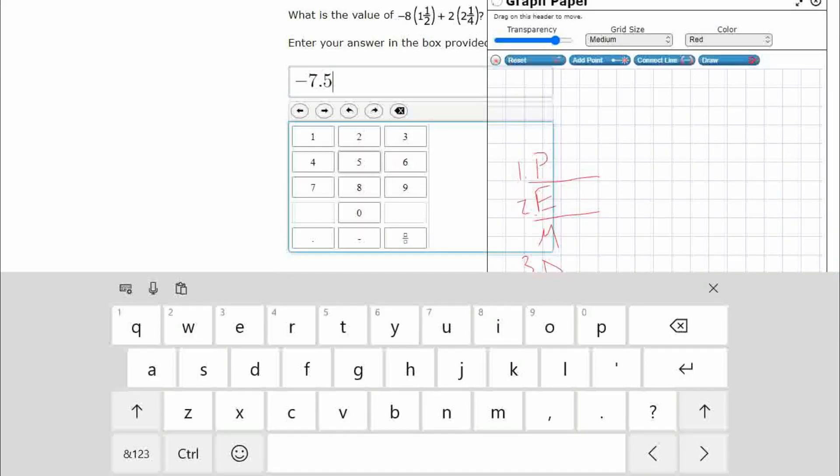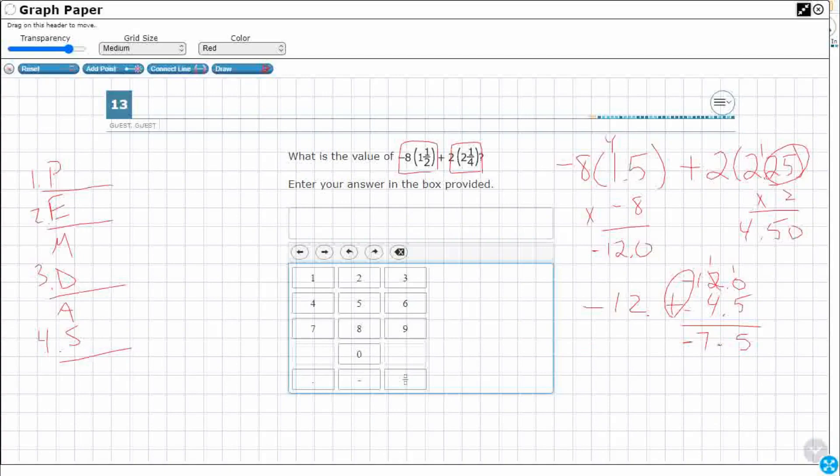So we could do that negative 7.5 right there. So that could work. But we've also got some other options. Remember, this started as decimals. I mean, as fractions.